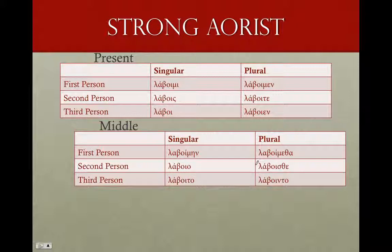The strong aorist — again no augment — but just like the present tense, we take our stem, theme vowel, iota, and ending. So: λάβοιμι, λάβοις, λάβοι, λάβοιμεν, λάβοιτε, λάβοιεν. Perfectly regular. In the middle: λαβοίμην, stem, theme vowel, iota, ending — λάβοιο, λάβοιτο, λαβοίμεθα, λάβοισθε, λάβοιντο. The strong aorist is perfectly regular.